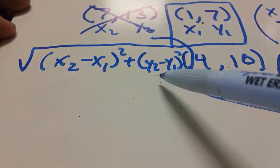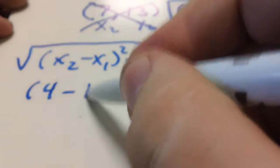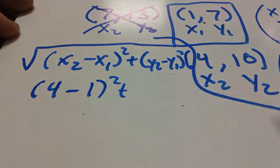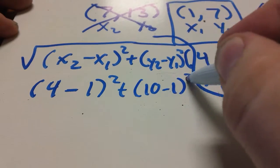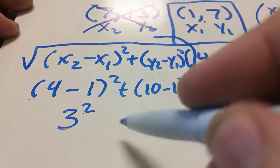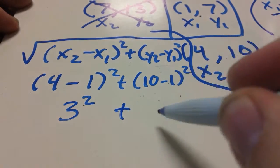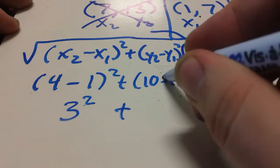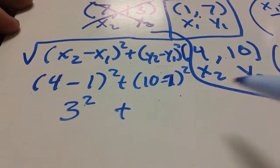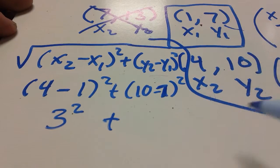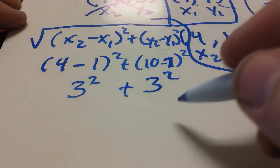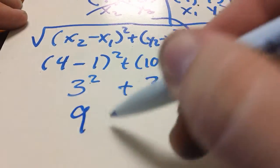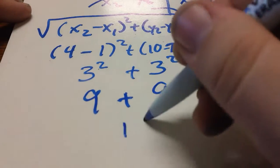So we'll go ahead and put our numbers in. x2 being 4, x1 is 1 squared. y2 is 10, y1 is 7. So, 10 minus 7 squared. 4 minus 1 is going to be 3 squared. 10 minus 7... sorry, I don't know why I wrote a 1 there. It's 10 minus 7, because y1 is 7. That's going to give us 3 squared as well. So this actually turned out to be pretty simple. So, 3 squared is 9. 9 again. And we get 18.